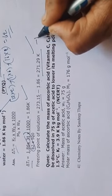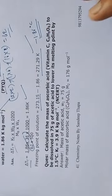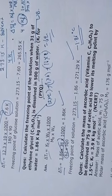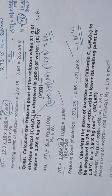The solution freezes at 271.29 Kelvin, or minus 1.86 degrees Celsius below 0°C. Practice the other questions; some unsolved ones are at the end of the notes. Do not attempt questions where the van't Hoff factor 'i' is given — those will be covered separately after all colligative properties are complete. Thank you.